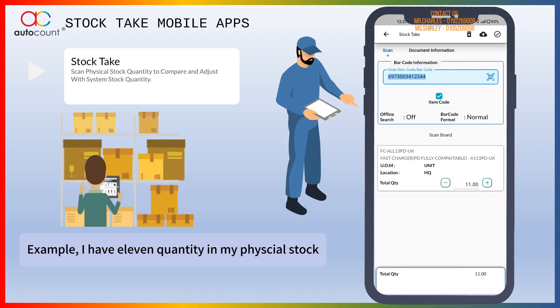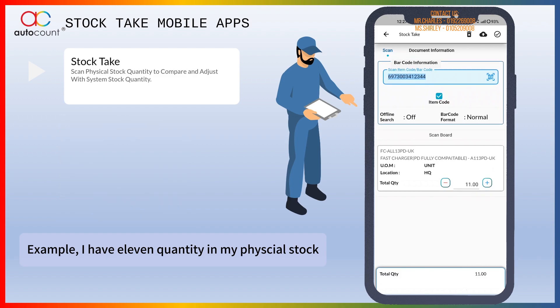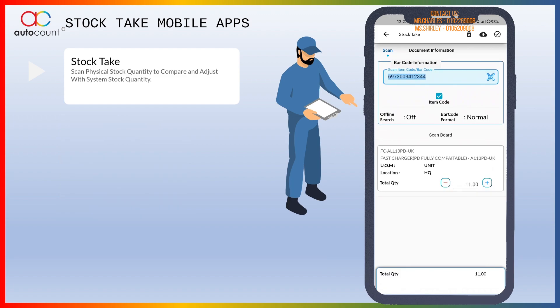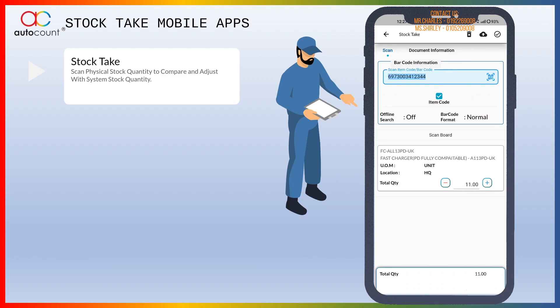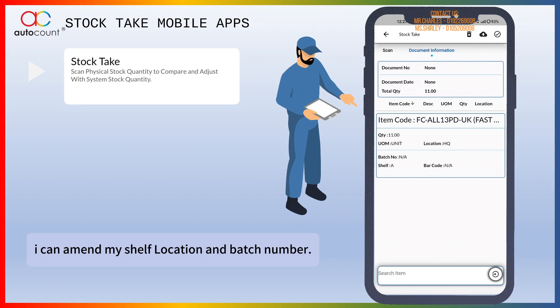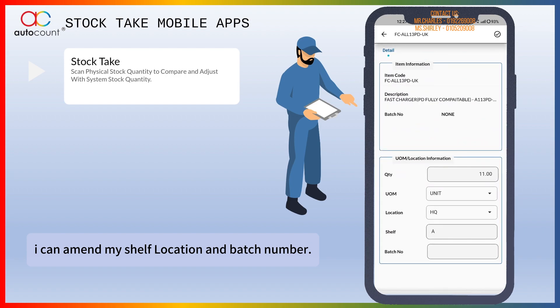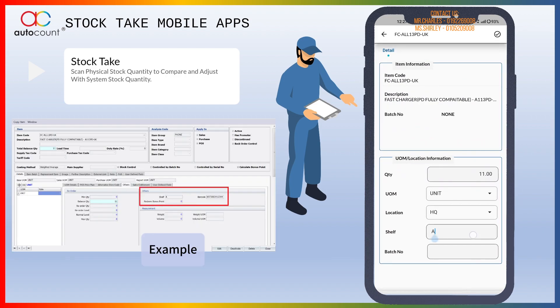For example, I have 11 quantity in my facial stock. I can also check more stock information by clicking the document information. I can amend my shelf location and batch number.